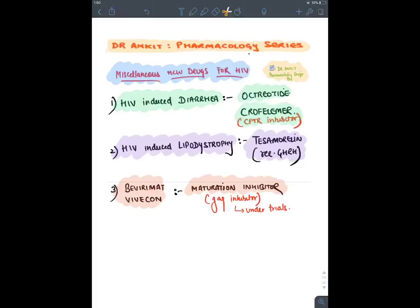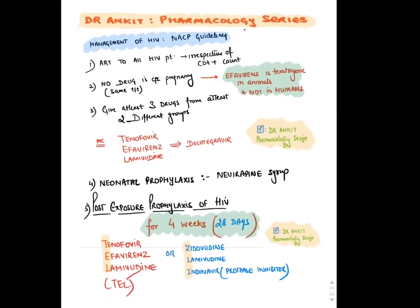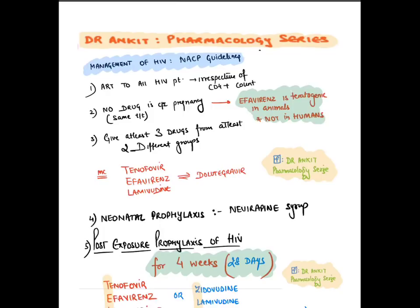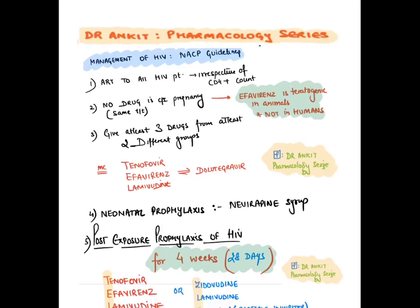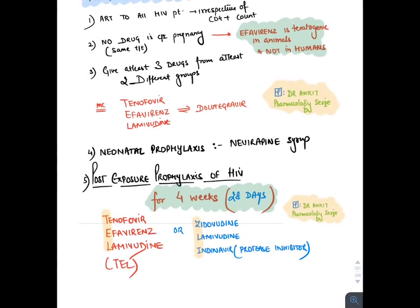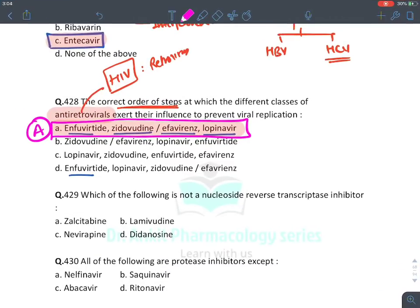New HIV drugs: for diarrhea — Octreotide; for lipodystrophy — Tesamorelin; maturation inhibitors — Bevirimat and Vivecon. HIV guidelines (NACP): ART given to ALL HIV patients regardless of CD4 count. No drug is contraindicated in pregnancy — Efavirenz is now drug of choice in pregnancy. At least three drugs from at least two different classes are required. Standard TEL regimen: Tenofovir + Efavirenz + Lamivudine; Efavirenz can be replaced with Dolutegravir. Neonatal prophylaxis: Nevirapine. Post-exposure prophylaxis (4 weeks/28 days): TEL therapy or Zidovudine + Lamivudine + Indinavir.